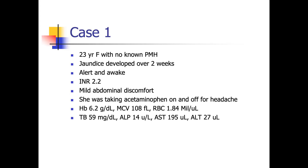We're going to discuss two cases. The first case is a 23-year-old female with no medical history. She developed jaundice over approximately two weeks. She's alert and awake, INR is 2.2, mild abdominal discomfort. She was taking some acetaminophen on and off for headache. Labs are significant: hemoglobin 6.2, MCV 108, RBC 1.84, hematocrit approximately 20, total bilirubin 59, alkaline phosphatase 14, AST 195 units per liter, and ALT 27.